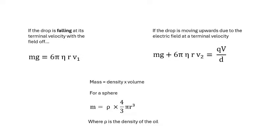There's another equation we're going to use and that's basically density is mass over volume. The volume of a sphere is 4/3πr³, so the mass will be the density of the oil times 4/3πr³ where r is the radius of the drop.